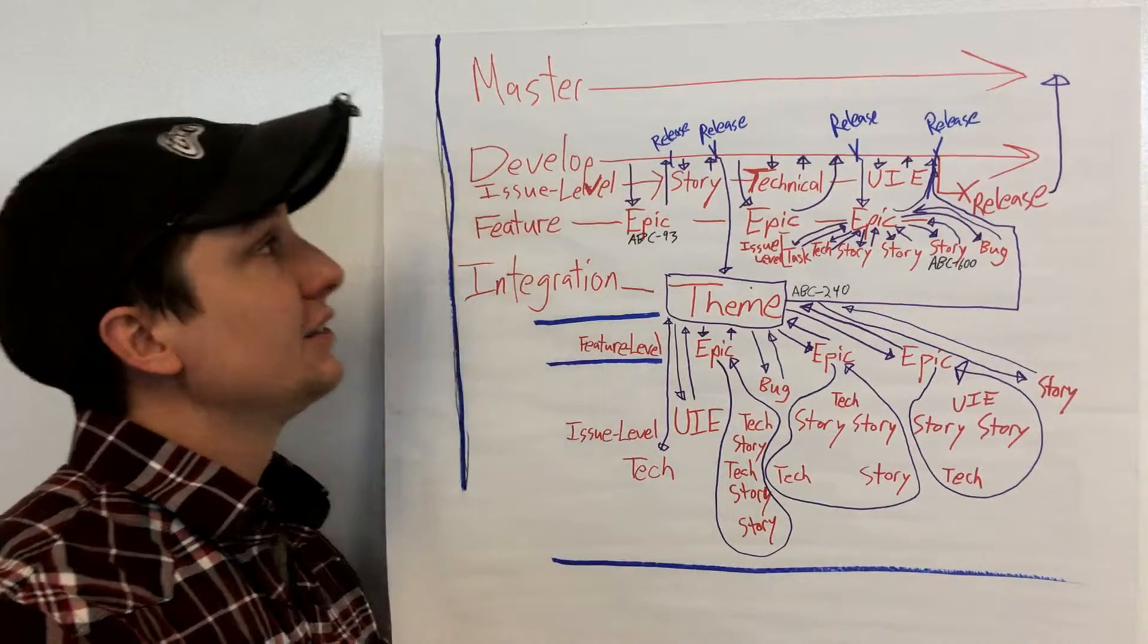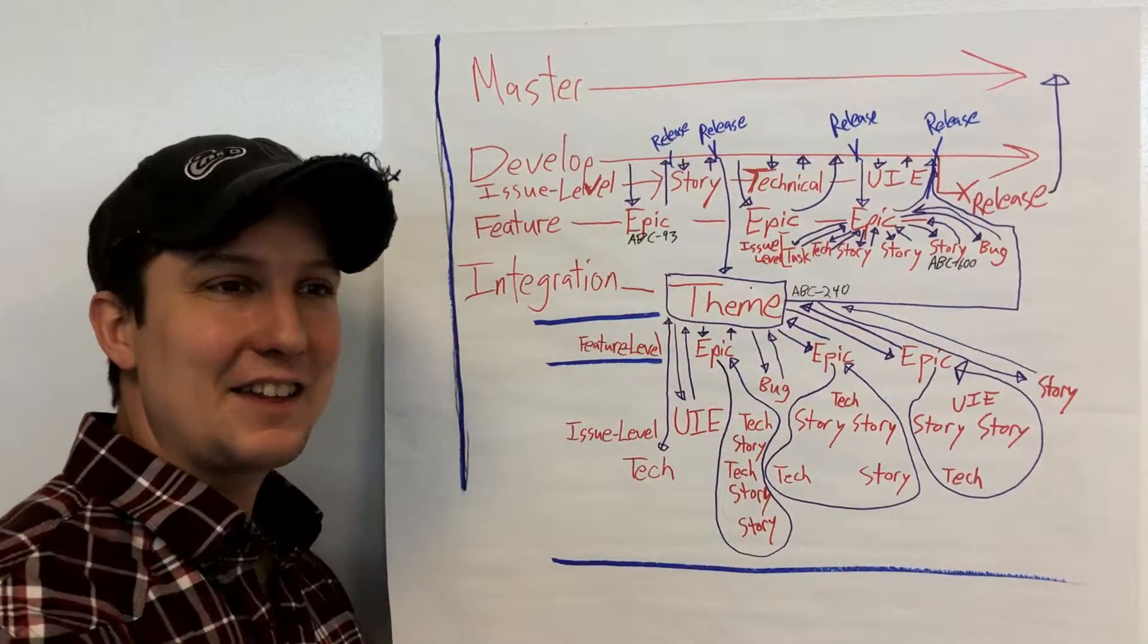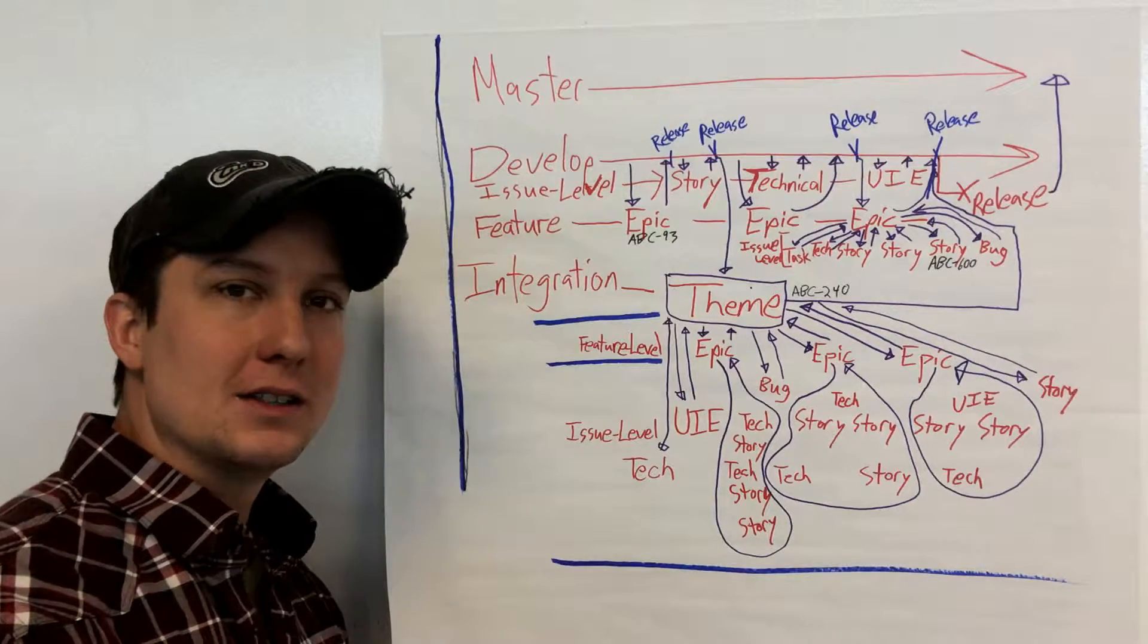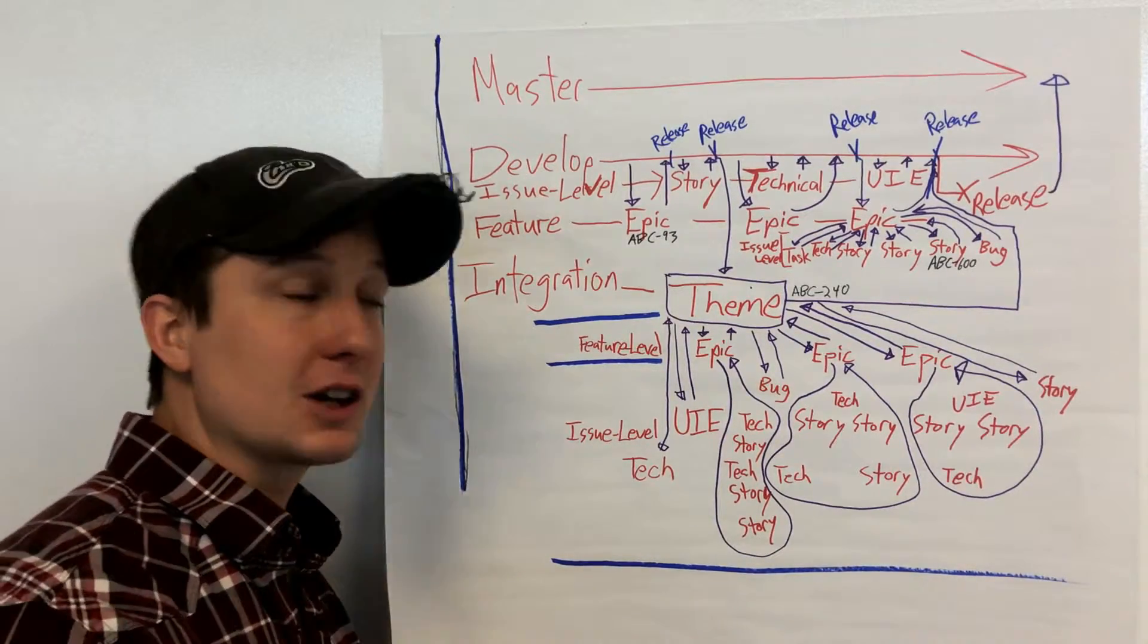So let's start from the ground up. First of all, you have master. That should, at all times, represent as closely as possible the code that is currently in production.